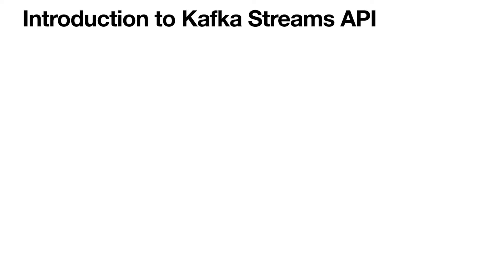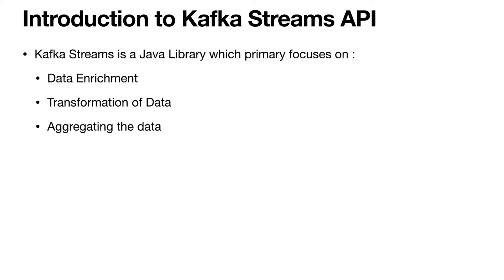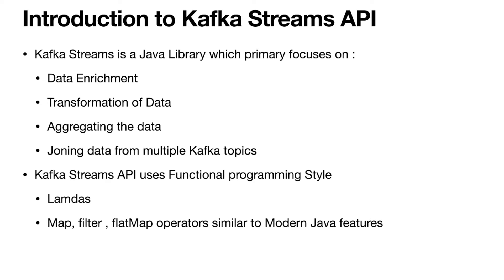I hope you all have an idea about the different client APIs to interact with Kafka. In this specific course, we are going to explore the Kafka Streams API in detail, and we will build production-grade applications using some real-time use cases. Kafka Streams is a Java library which primarily focuses on data enrichment, involving transformation of data, aggregating the data, and joining the data from multiple topics. Kafka Streams API uses the functional programming style, meaning we will be using lambdas and operators such as map, filter, and flat map that were introduced in Java 8. So you need to have experience working with Java 8 features in order to build applications using Kafka Streams API.